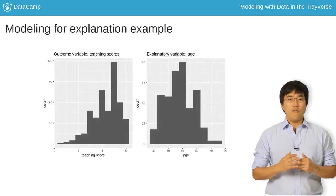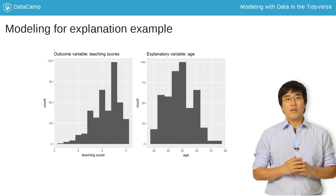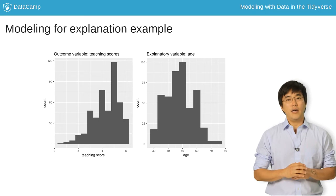Earlier, you performed a univariate EDA on the outcome variable score and the explanatory variable age. By univariate, we mean they only considered one variable at a time.